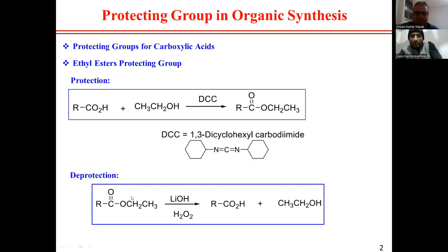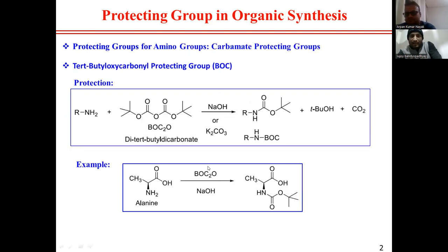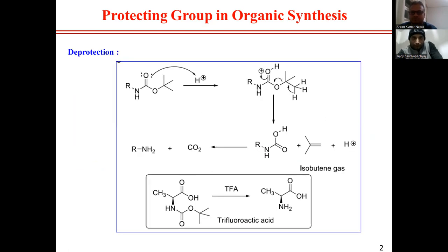Another good protecting group is DCC (1,3-dicyclohexylcarbodiimide), which is used for protecting the carboxylic acid group. Treated with lithium hydroxide in the presence of hydrogen peroxide, we can recover the corresponding carboxylic acid. Boc (tert-butoxycarbonyl) is also well-known for protecting amine groups. In pharmaceutical drug molecules, there are many amine functional groups present, and we need to protect them. Using Boc, we can easily protect the amine; treating with trifluoroacetic acid removes the Boc group to get back the desired amine.